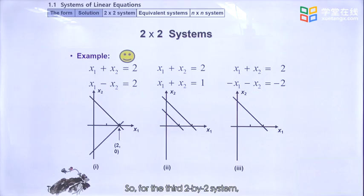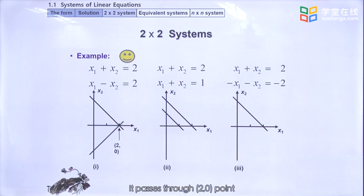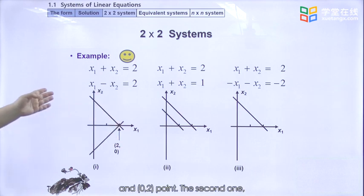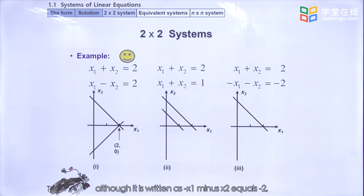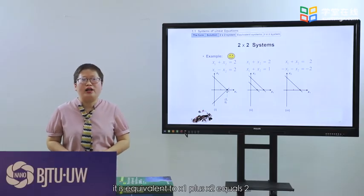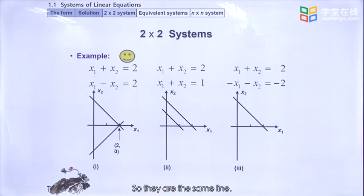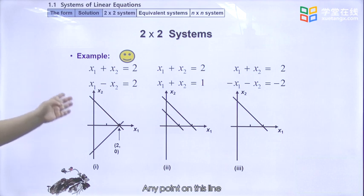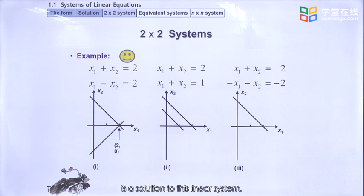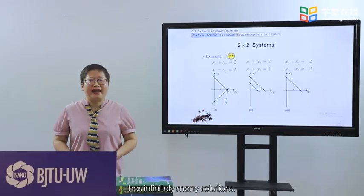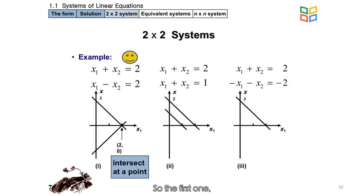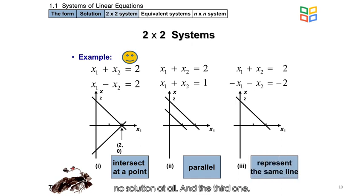For the second 2×2 system, x1 + x2 = 2 and x1 + x2 = 1 are parallel lines, so there is no solution. For the third system, x1 + x2 = 2 and −x1 − x2 = −2 represent the same line, since the second equation is equivalent to x1 + x2 = 2. Any point on this line is a solution, so there are infinitely many solutions.